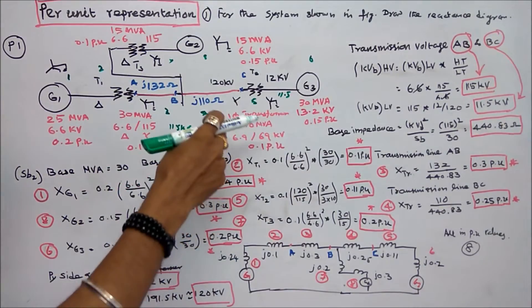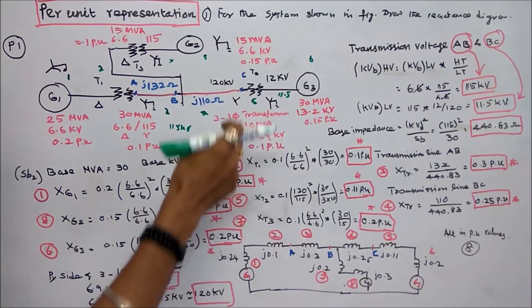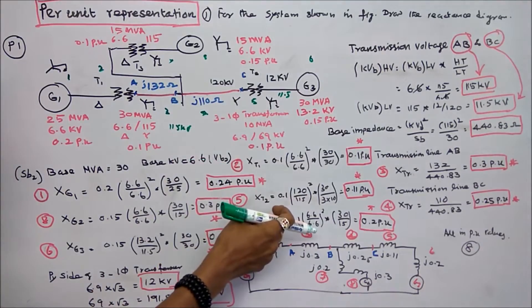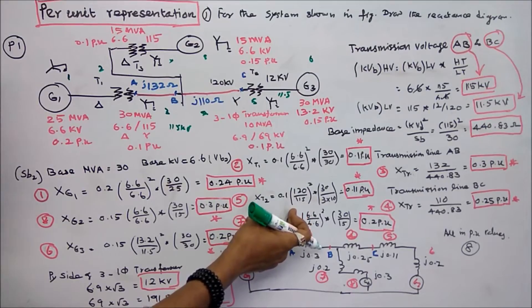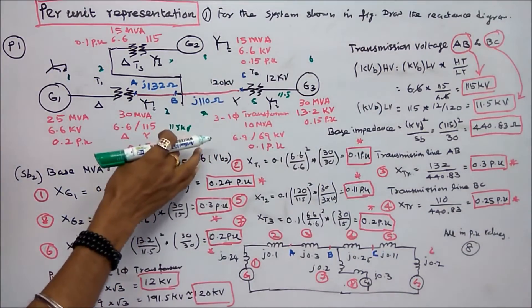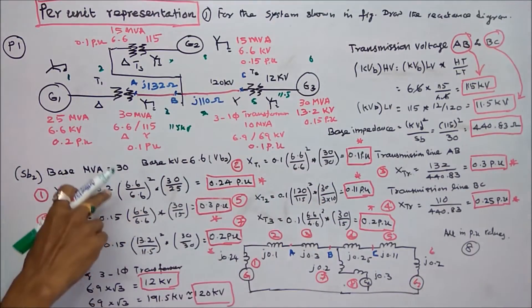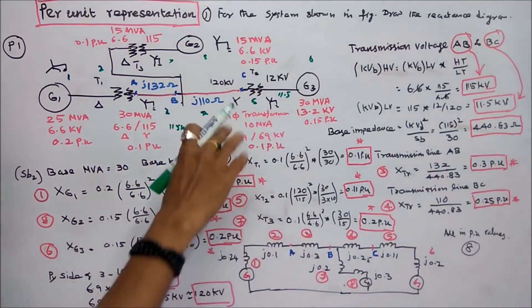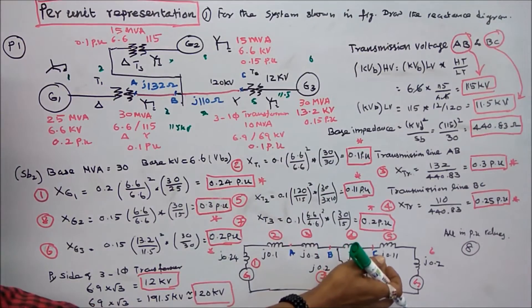The fifth component is the bank of three single-phase transformers: 3 × 10 = 30 MVA. The per unit reactance = 0.1 × (120/115)² × (30/30) = 0.11 per unit.